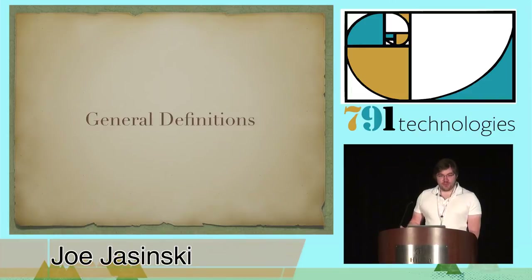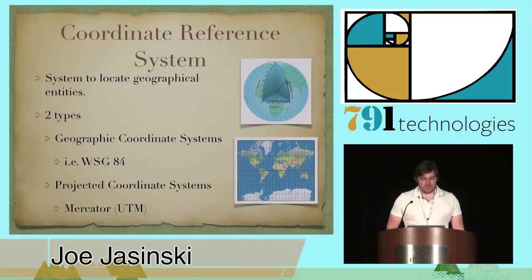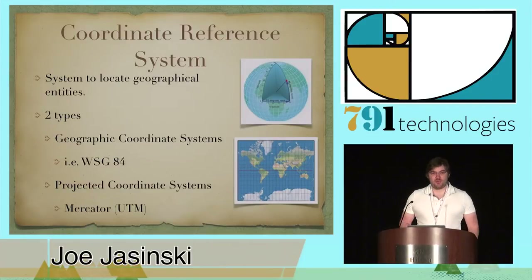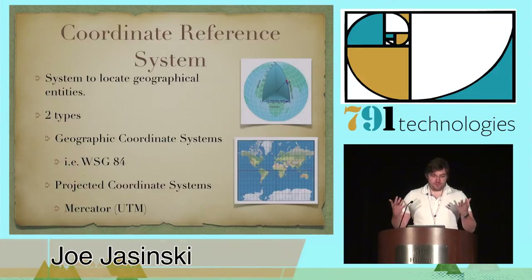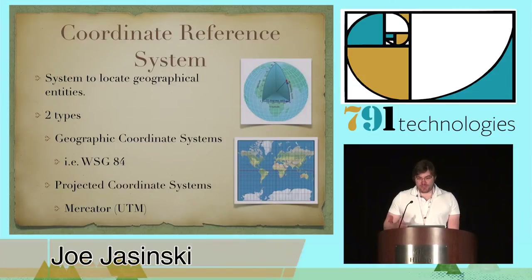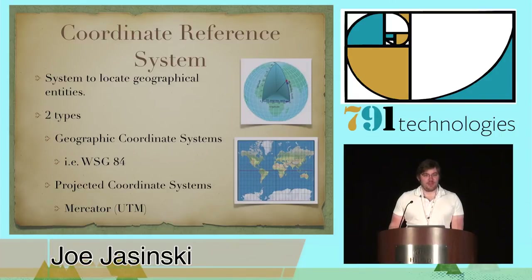I'd like to cover a few general definitions that I found useful. One of them is a coordinate reference system, which is a system to locate geospatial entities on a map. There are two basic types: geographic coordinate systems, which represent the Earth as a sphere or spheroid, and projected coordinate systems, which project maps onto a flat surface. You've probably heard about the problems with projected coordinate systems — map distortions occur when you flatten a sphere. They're particularly good at representing local data. Coordinate systems are important because data could be encoded in any number of them, and you need a way to normalize that data to perform math and display them on the same map.